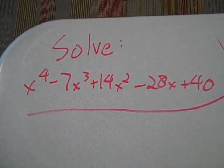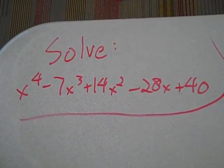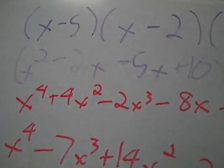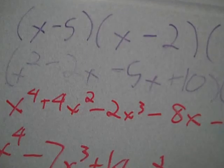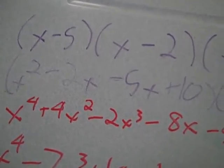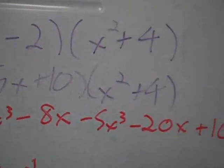I'm Scott, and I'm Ben. This is our problem. This is how we got our problem. First we thought about some factors that could be in the problem. We said x minus 5, x minus 2, and x squared plus 4.